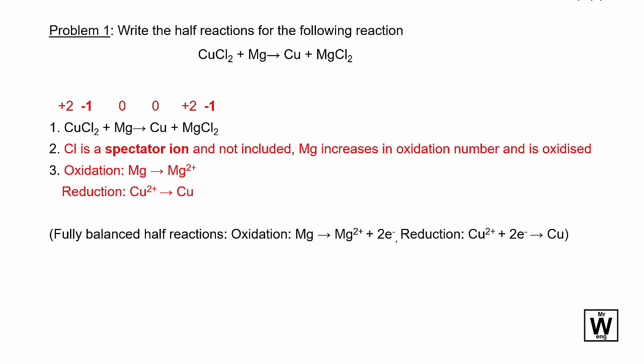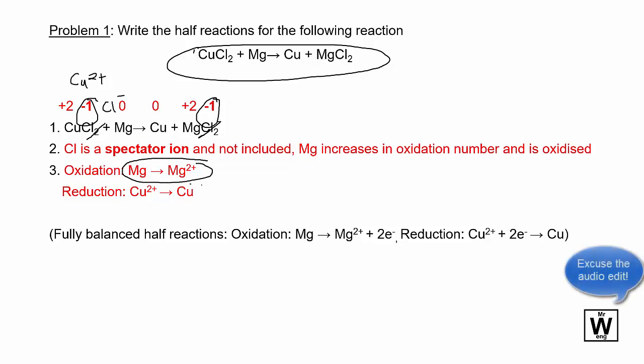So here's an example. We've got this equation up here. So we've written in the oxidation numbers and you can see that it's only the chlorine that doesn't change. So we get rid of the chlorine and we know that is Cu2+ because the chlorine has to always be minus, so we know that from our naming of ionic compounds. And so we remove the chlorine and we just have Mg going to Mg2+ and Cu2+ going to Cu.